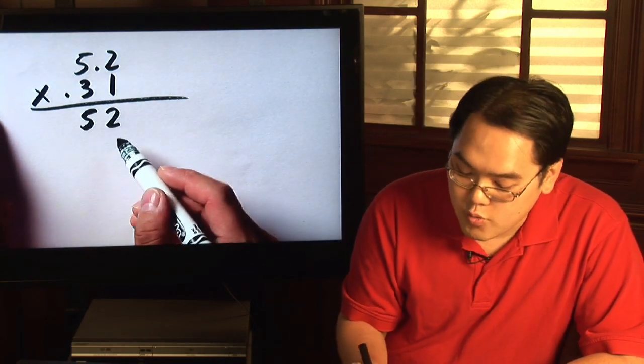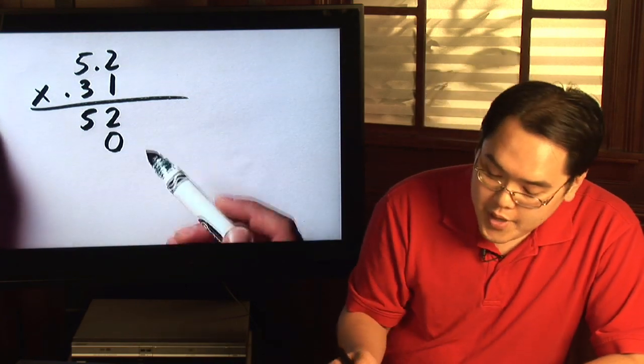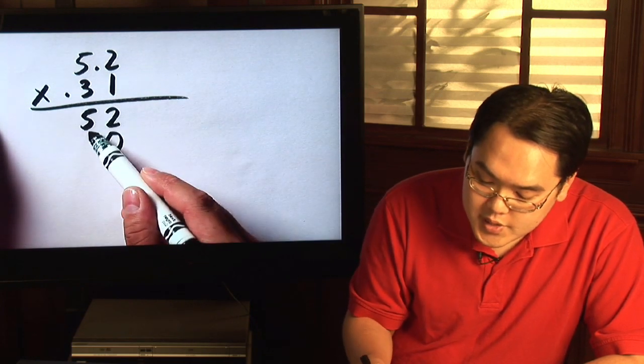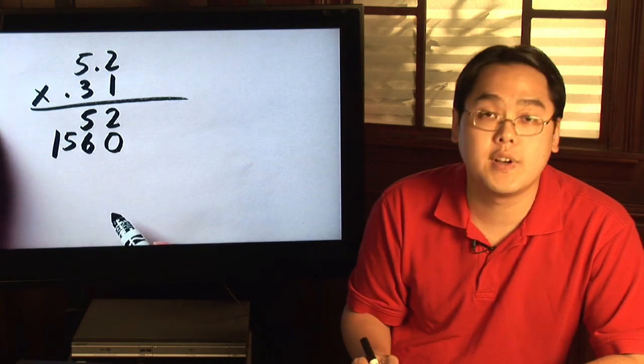For the second line, remember that when you move to the next digit, always put a 0 or leave it blank - it's up to you. Then 3 times 2 is 6, and 3 times 5 is 15, which you put right here.